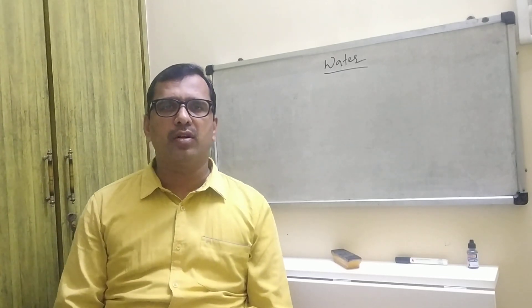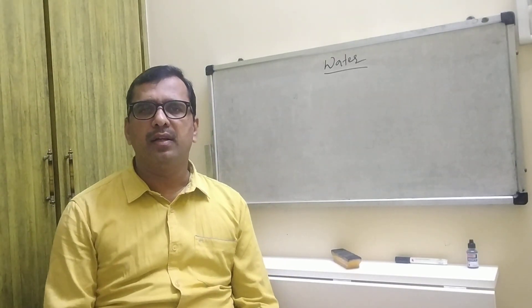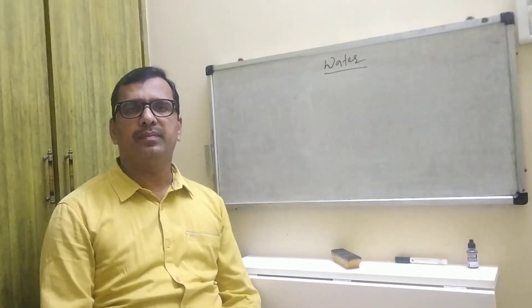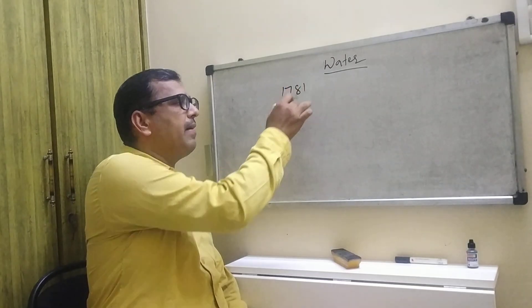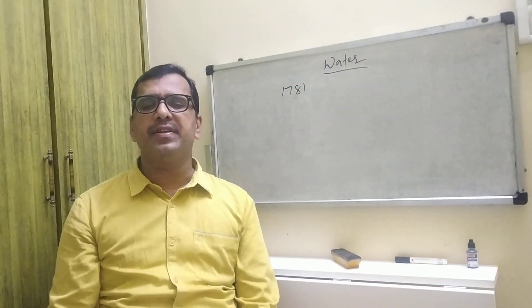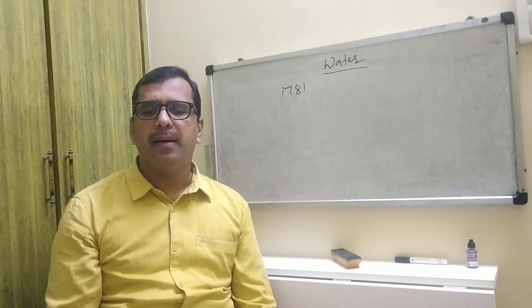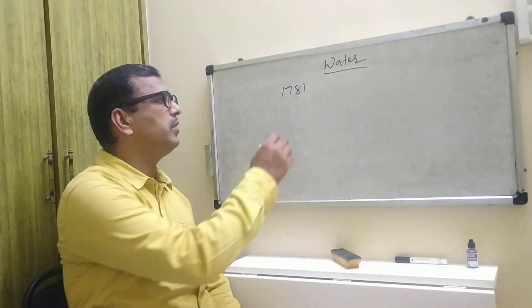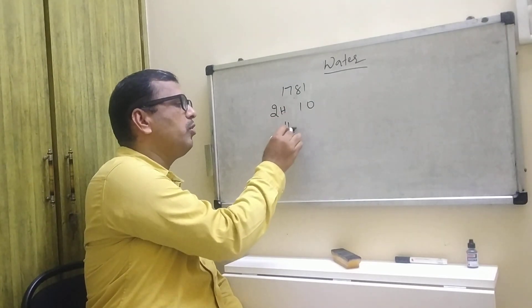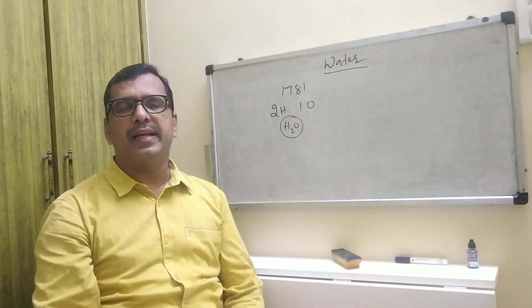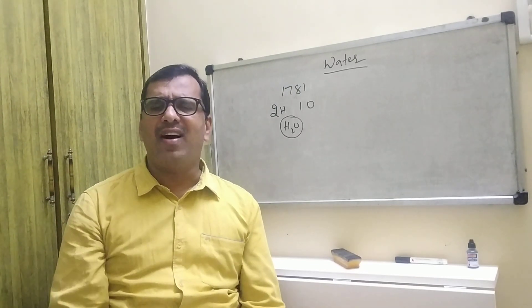Hi, Dr. J.M.R. Chemistry classes. Today I am going to start a new lesson: water. In 1781, Henry Cavendish, an English physicist, showed that water can be prepared by igniting two volumes of hydrogen and one volume of oxygen. They combine to form water. The chemical formula of water is H2O.